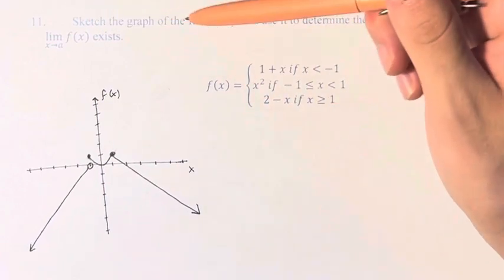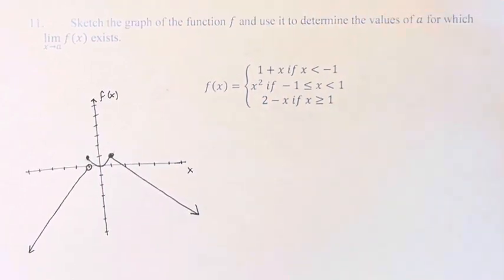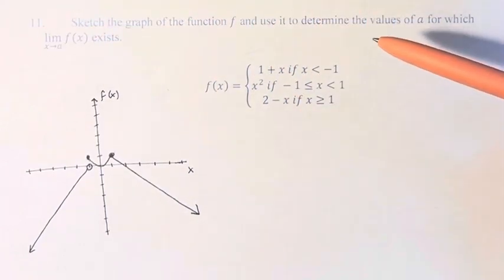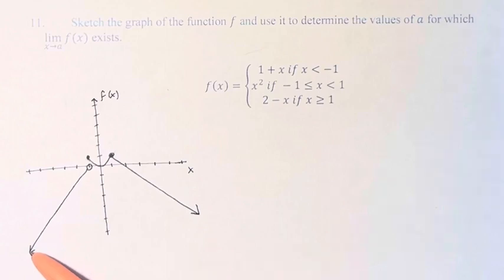So we're asked to sketch the graph and use it to determine which values x, the limit as x approaches a of f(x) exists. So starting as far left as we can see the function, we just look for a visual discontinuity.